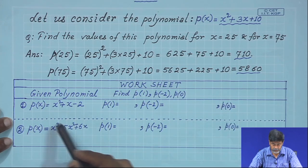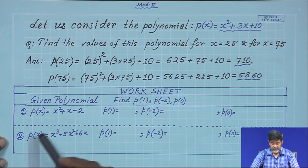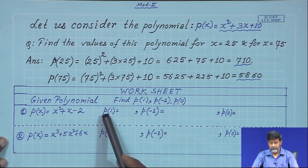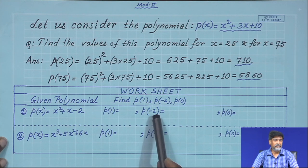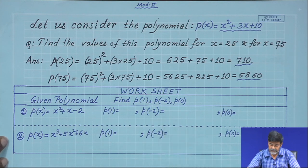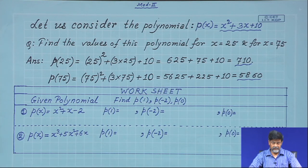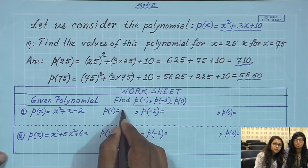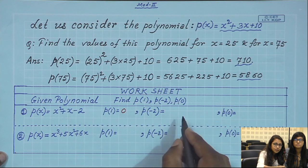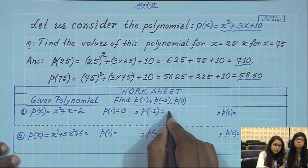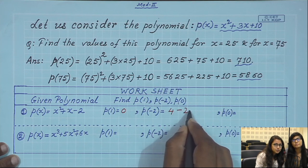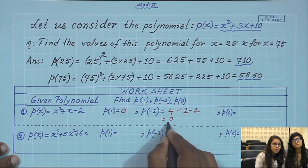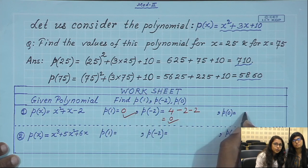I am giving some polynomials with short notations p(x). Calculate the values of p(1), p(-2), etc. For the first expression, p(1) = 0 and p(-2) = 0, since the first term is 4, the second is -2, and the third is -2, totaling 0. For p(0) it is -2.